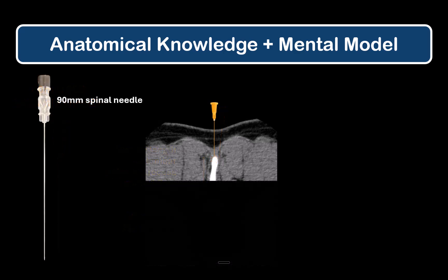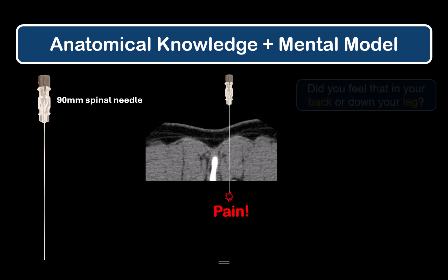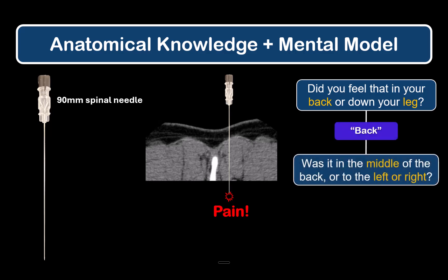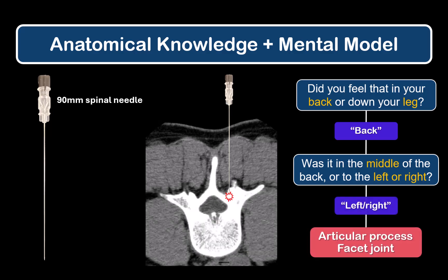If you do touch deeper bone and you elicit pain, you should ask the following questions. If the patient localizes this pain to their back — not their leg — and reports it as on their right or left versus the middle of their back, then you've contacted the highly innervated facet joint of the articular processes. And this means you're definitely off the midline and much too lateral for success with either the midline or paraspinous approach.